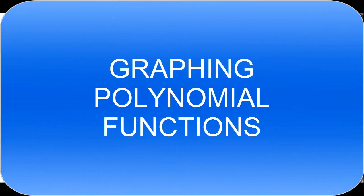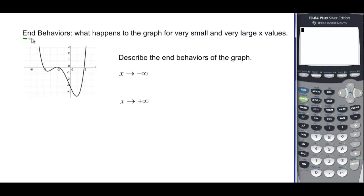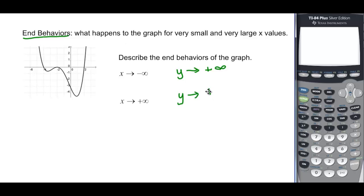In this video, we'll talk about graphing polynomial functions. We'll talk about end behaviors — what happens to the graph at very small and very large values of x. As x goes to negative infinity, the y values are going to positive infinity. And as x gets very large, y would also be going to positive infinity. So we would say this is what we call an up-up.